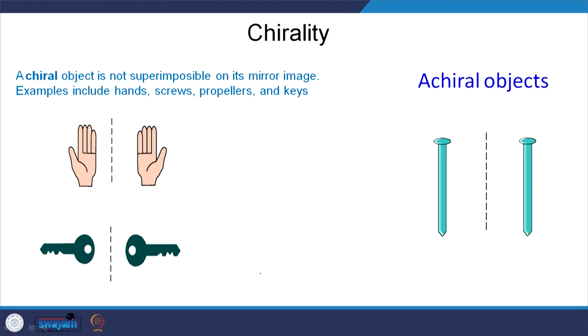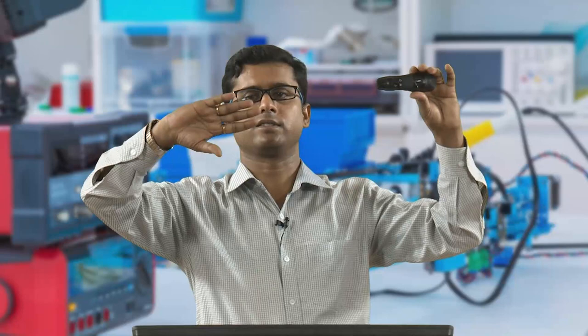Chirality: an object is called chiral when it cannot be superimposed on its mirror image. For example, this hand — its mirror image is the other hand, and if you try to put them together they do not superimpose. Such objects are called chiral. Objects whose mirror image can be superimposed on the original are called achiral. In English letters, T, I, O are achiral; R, C, E are chiral.